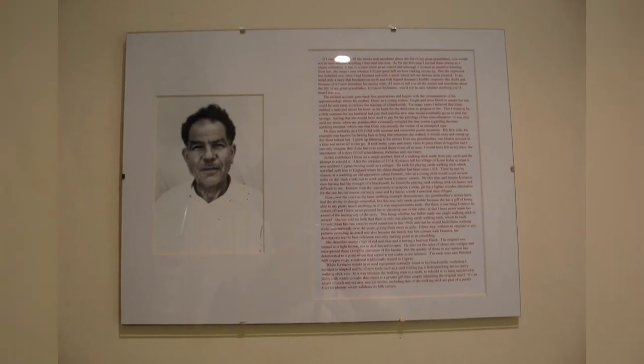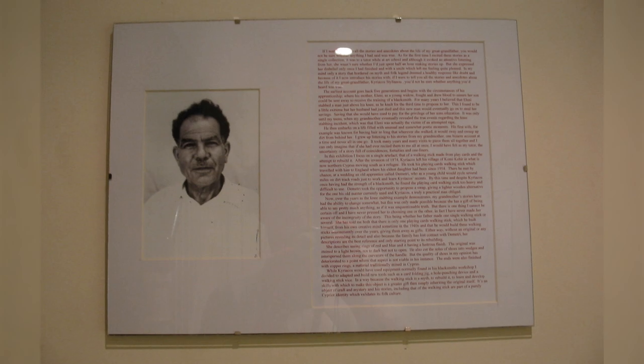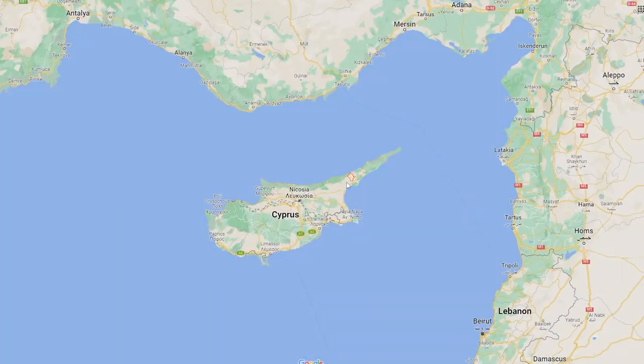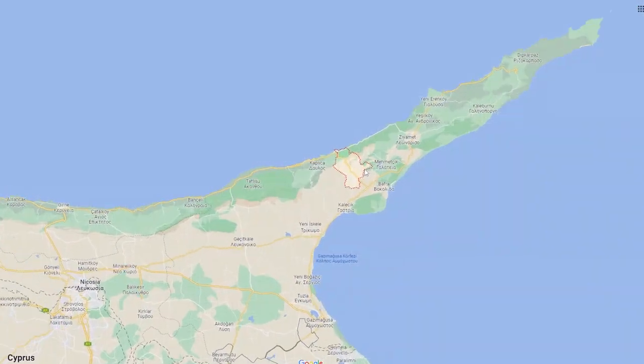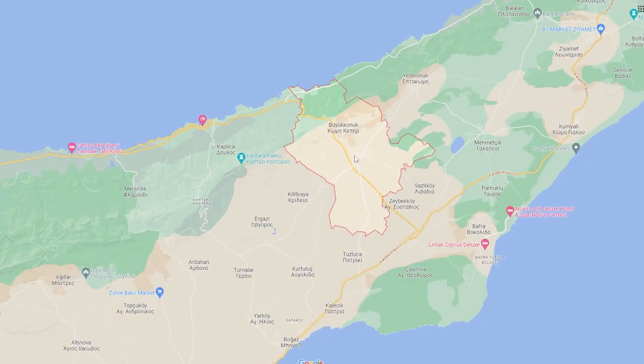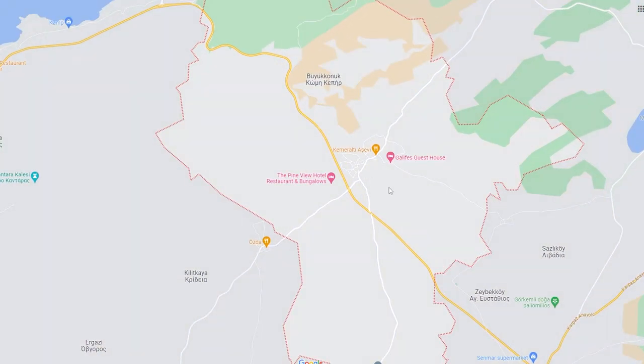In the last video I introduced the characters that make up part of a family mythology, linking myself to a place I've never actually been to, a small village called Komi Kabir in what is now Northern Cyprus.